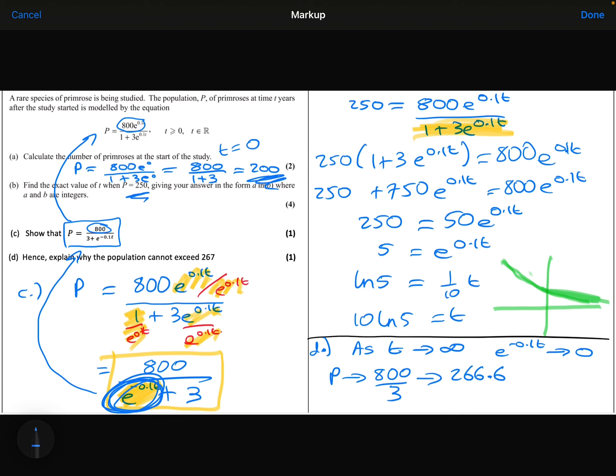So the population is going to keep on getting bigger, bigger, bigger, but it is only ever going to get closer and closer to 266.6. It cannot, therefore, exceed 267. It won't even reach 267 from what we've just seen. It's just going to get close to 266.6 according to this model.